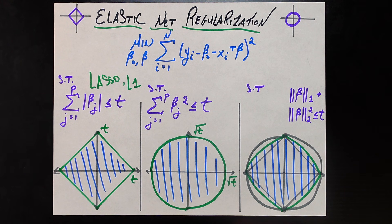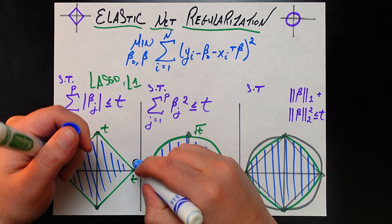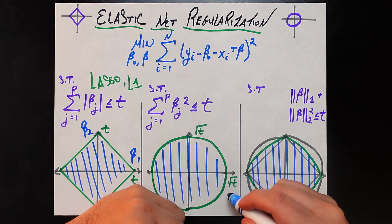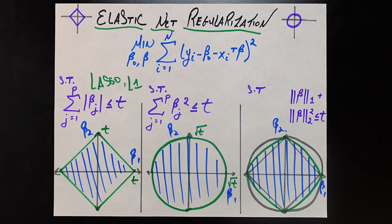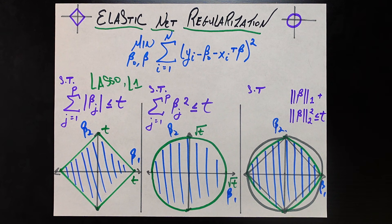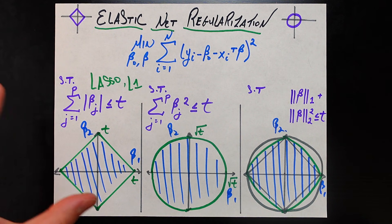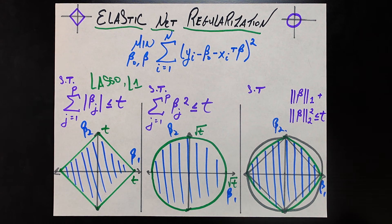In the simple case with just beta-1 and beta-2 we can visualize this. The x-axis is beta-1 and the y-axis is beta-2. In this beta-1 beta-2 plane, the lasso constraint traces out a diamond whose corners are at t, negative t, and so on. We are saying you need to pick a combination of beta-1 and beta-2 — and in general all betas up to beta-p — that falls on the boundary or inside of this diamond.